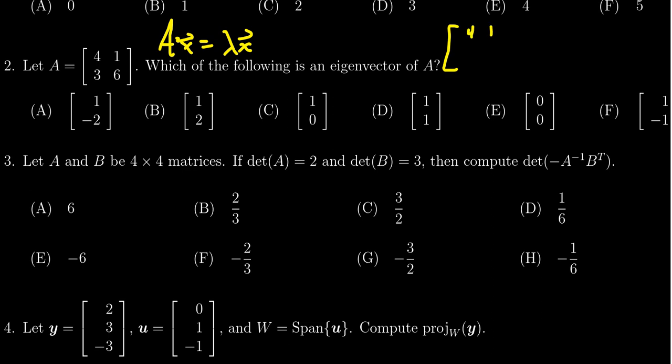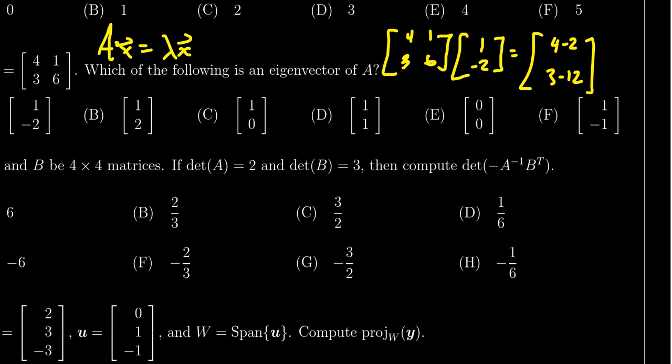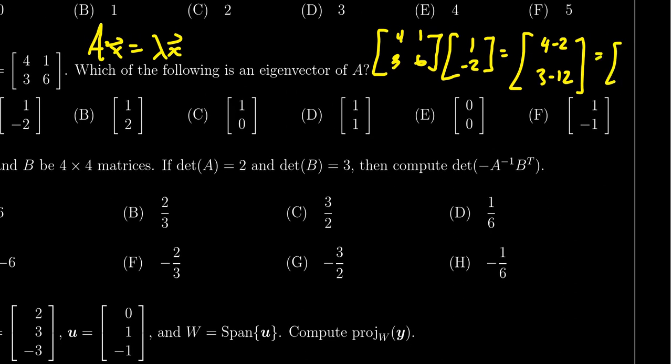Worst case scenario, we have to multiply these together six times. If we take the first row times the vector, we get four minus two and three minus twelve for the second one. That adds up to be two and negative nine, which is not a scalar multiple of the first vector. So we remove that one from the possibilities.